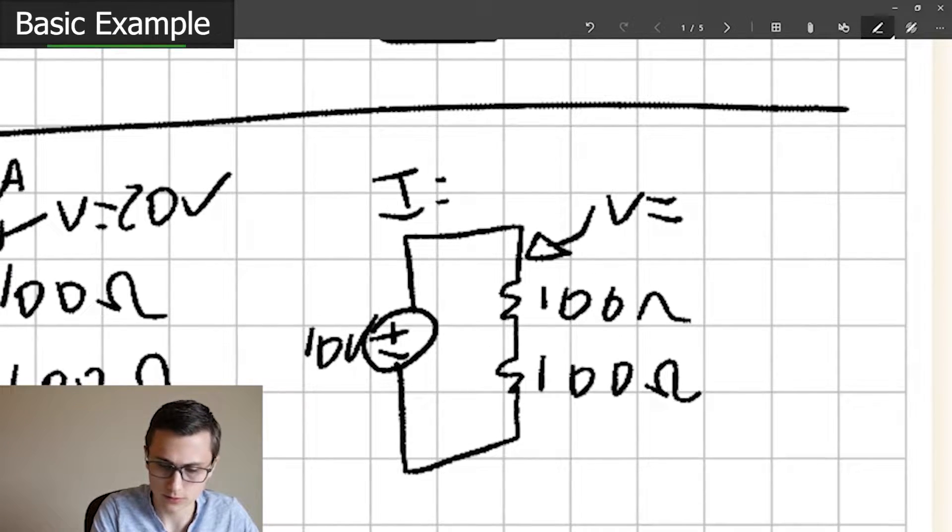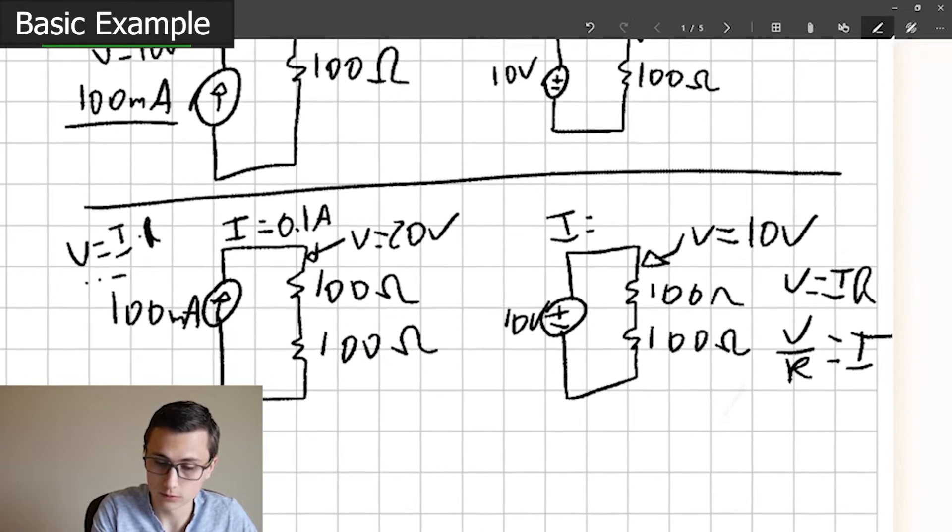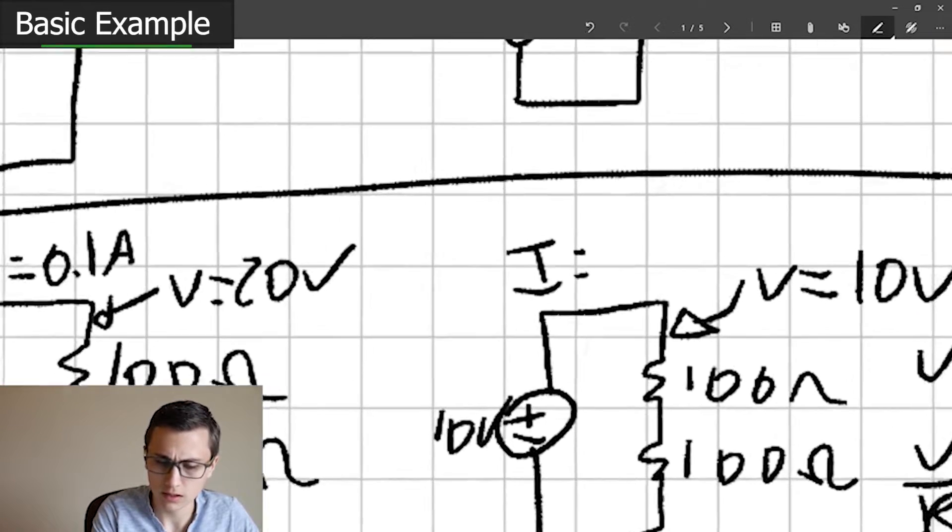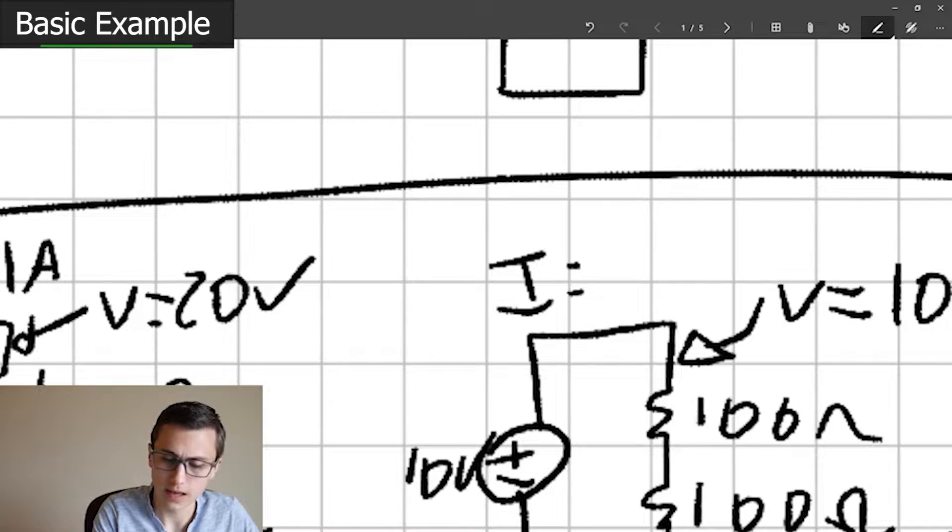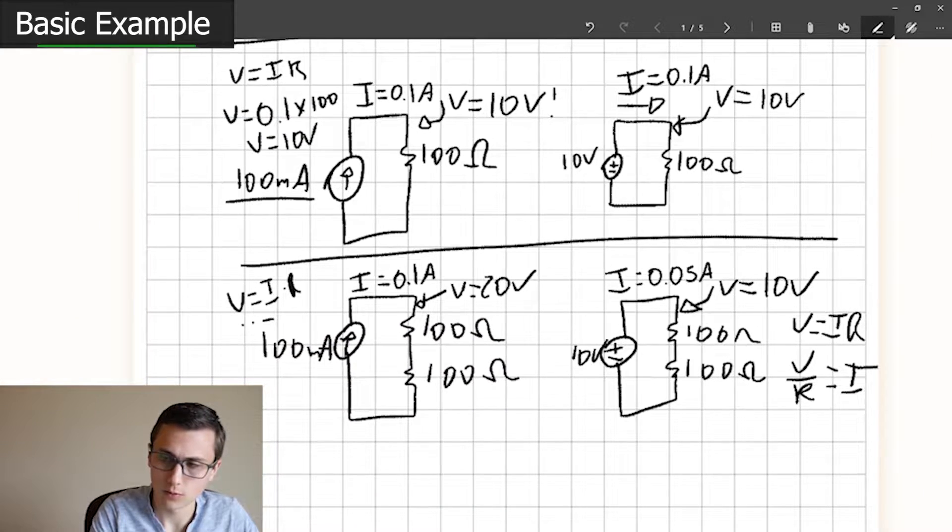What about our voltage source? Well, our voltage is still 10 volts. V equals I times R. So we need to rearrange that because we're solving for current. That's V over R equals I. Voltage over resistance is current. 10 volts divided by 200 ohms equals 0.05 amps.